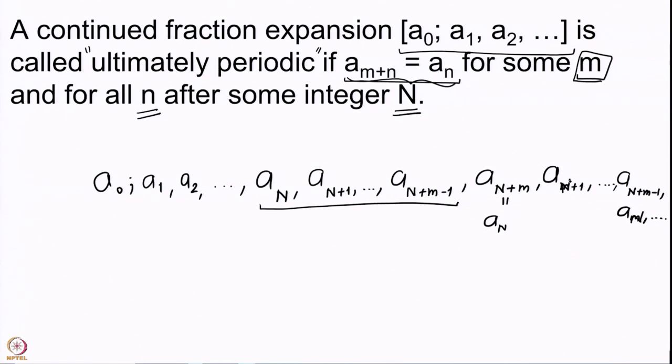Instead of a_{N+m} you will have a_N; instead of a_{N+m+1} you will have a_{N+1}. The period is the number m so that every partial quotient equals the partial quotient which appears m steps after it. This periodicity starts after some stage N, and these are called the ultimately periodic continued fraction expansions.